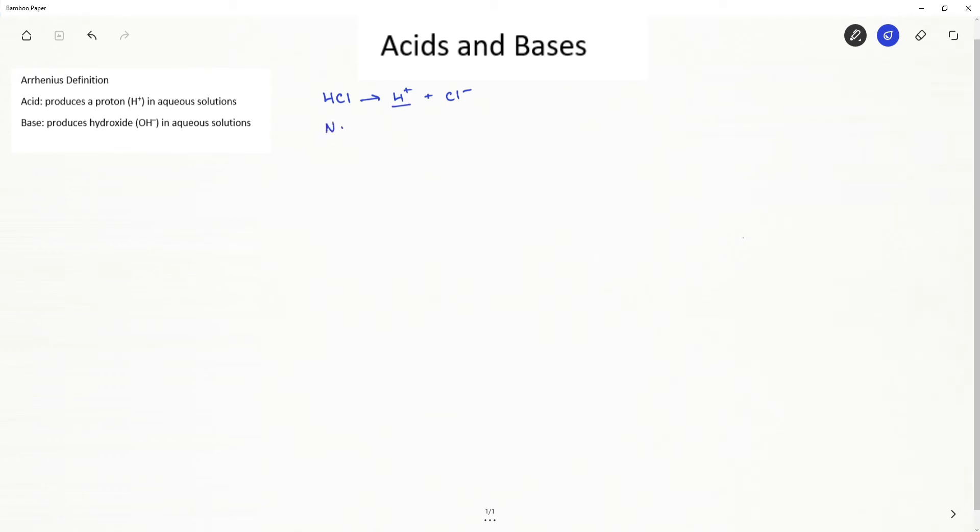Let's take a look at a base, sodium hydroxide. When we put this in water, we get a sodium cation, and we get hydroxide as an anion. Because we get hydroxide, it is a base according to the Arrhenius definition.